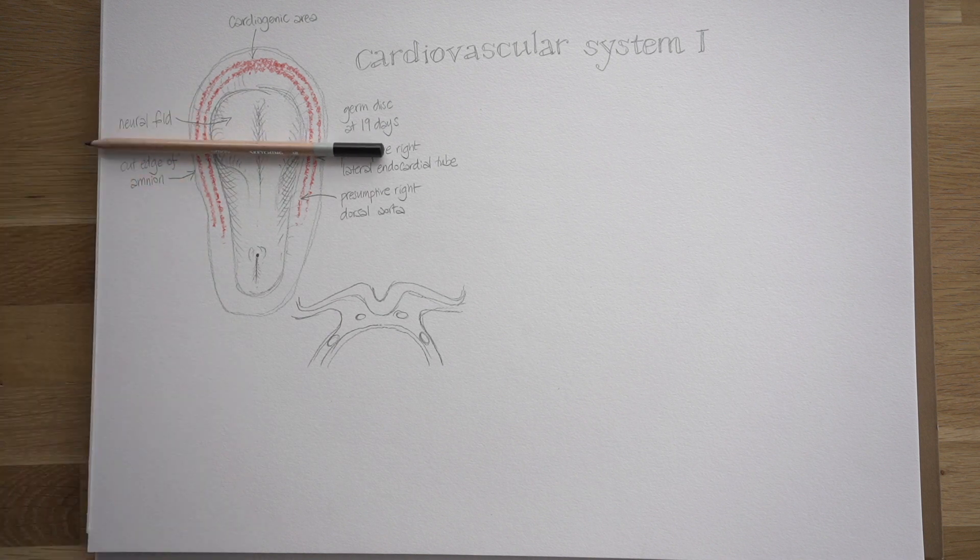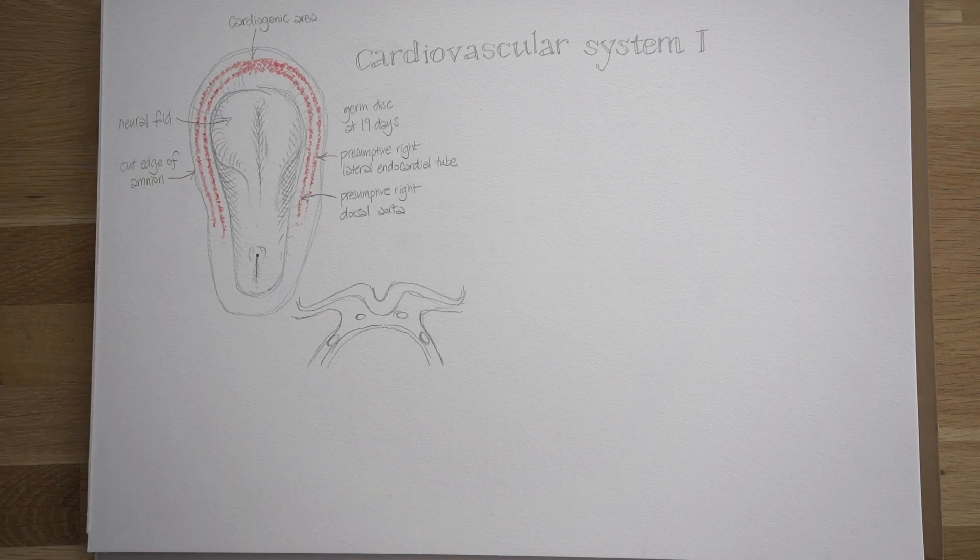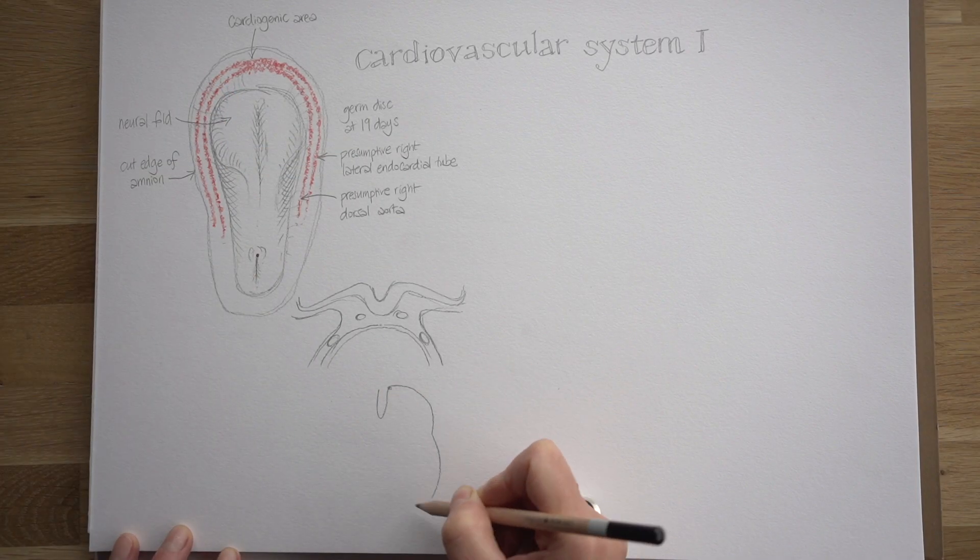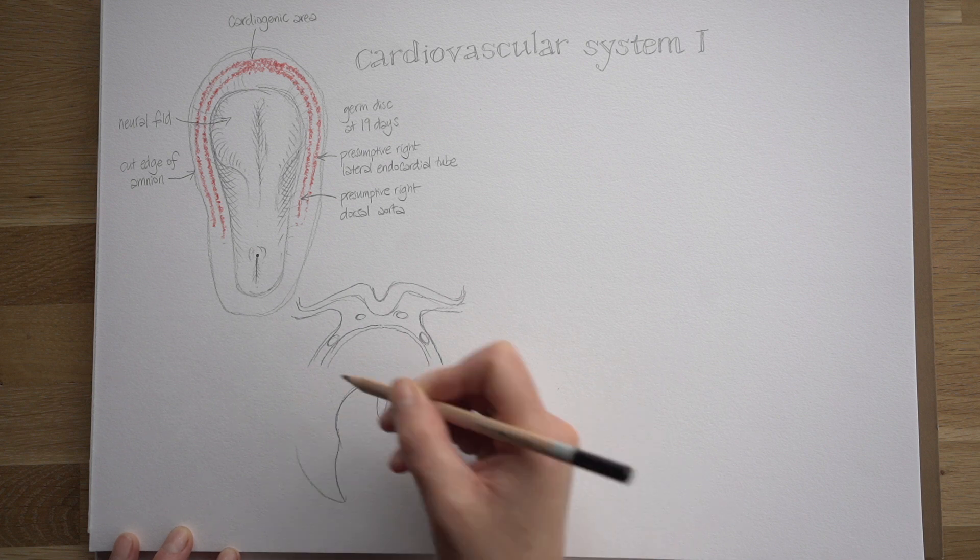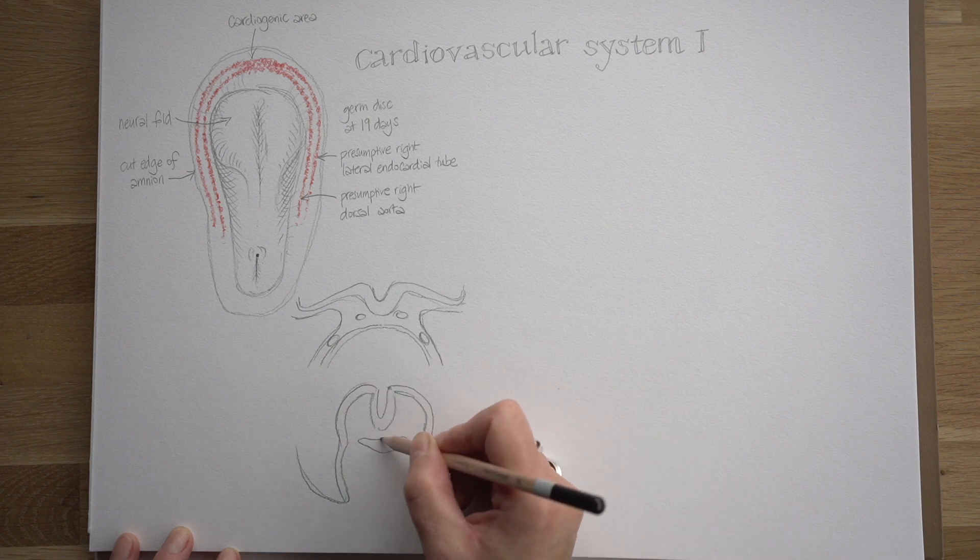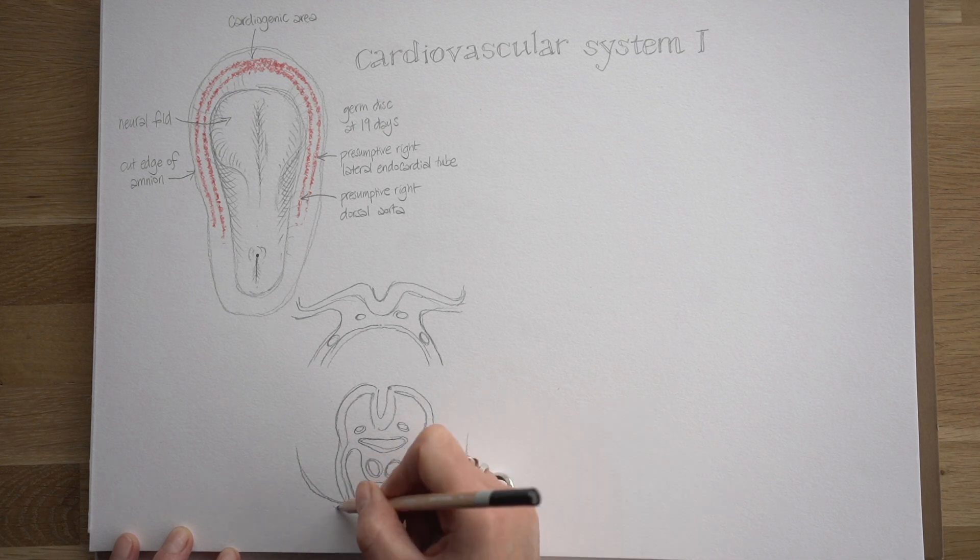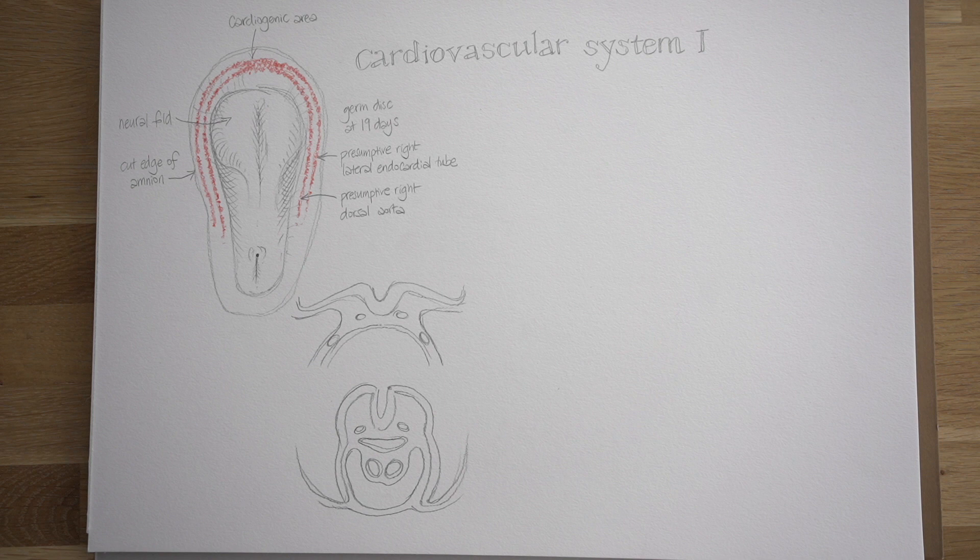I've now drawn a cross section through the embryo at about this level. What we can see in that cross section are slices through the two aorta and slices through those two endocardial tubes. Now I'm moving things on a bit so this embryo is starting to fold itself up. It's got that gut tube on the inside. The two endocardial tubes which started off right on the edges of the trilaminar germ disc are now brought together in the midline, pushed very close together in the midline.